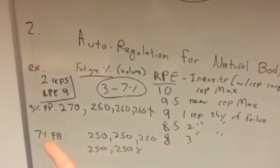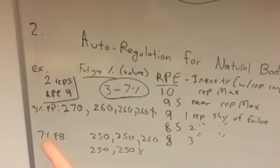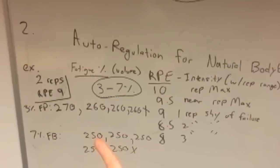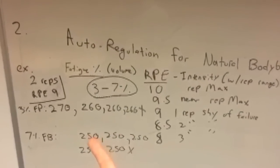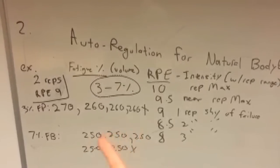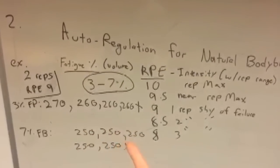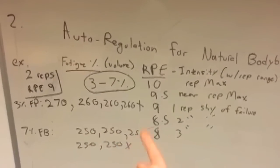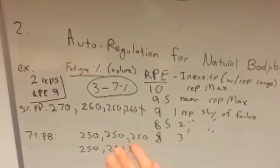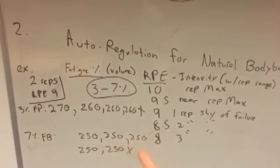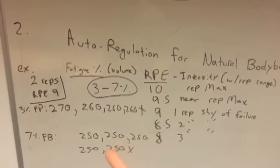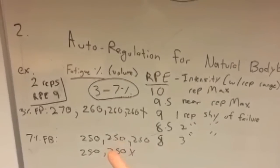Here, we've decided we want a higher volume day, so we do a seven percent fatigue reduction — 270 down to 250. Because it's lighter, we can do more back-off sets: one, two, three, four, five sets. Then we boom — we hit our nine point five or ten and stop. We've got nearly twice as much volume compared to the three percent example, but at a slightly lower load.